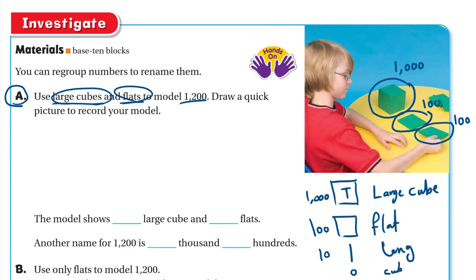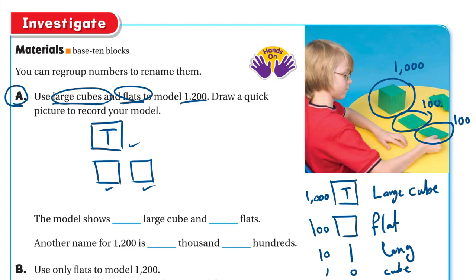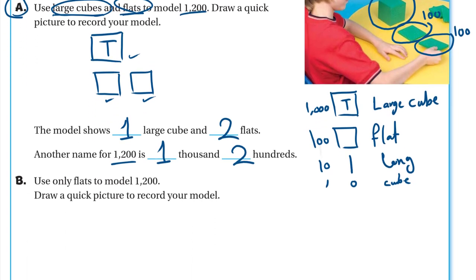To model 1200, we need one large cube — drawn as a square with the letter T inside — and then two flats. So this is 1000 and these are 200. The model shows one large cube and two flats. Another name for 1200 is: one large cube equals 1000 and two flats equals two hundreds.